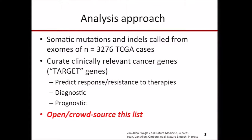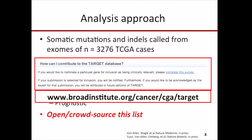Somatic mutations and indels were called from 3,276 TCGA patients, and we focused on clinically relevant cancer genes — genes that, when somatically altered, can predict response or resistance to known therapies, or have diagnostic or prognostic utility. So we created the TARGET database, a set of genes defined using expert opinion and literature to be clinically relevant in cancer. This database is now online, and here's a link to it.